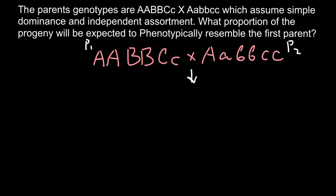If some of you think this organism has six genes, that is not so. This is gene A, gene B, and gene C. Because this is a diploid organism, each gene is present in two copies which we call alleles. For gene A, parent 1 has two identical dominant copies; for gene B, also two dominant copies; and for gene C, one dominant allele and one recessive allele.